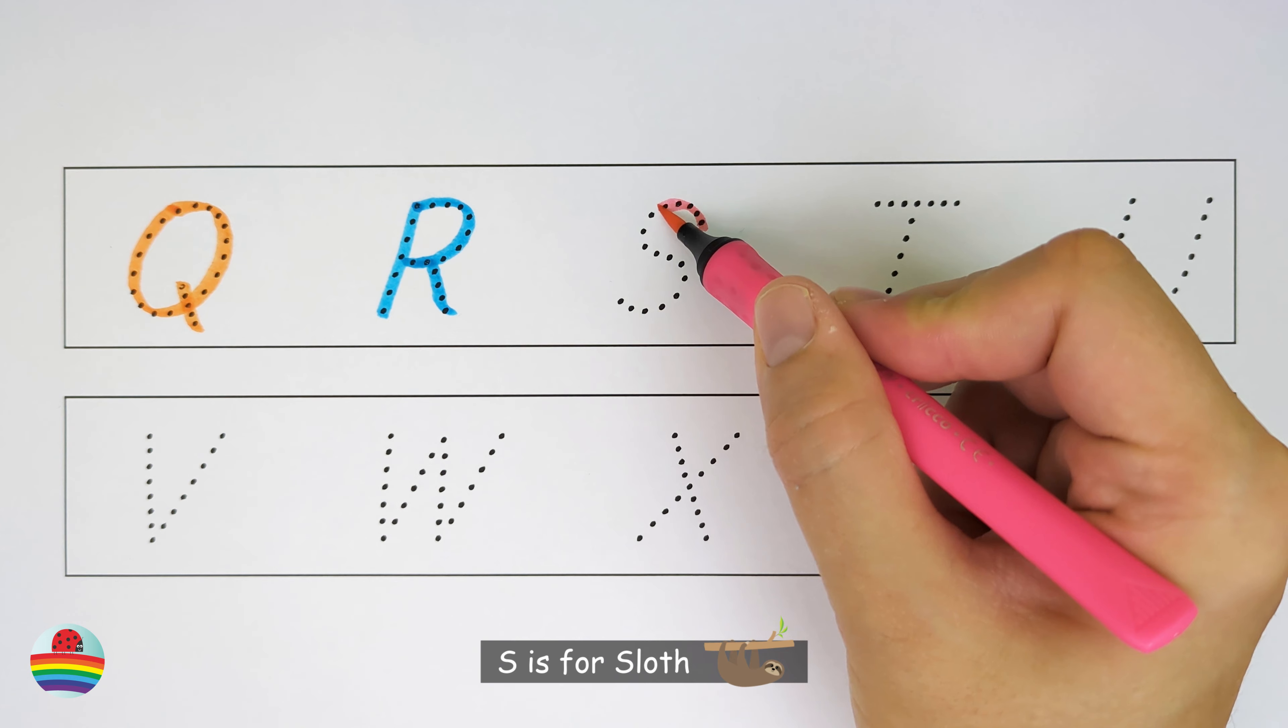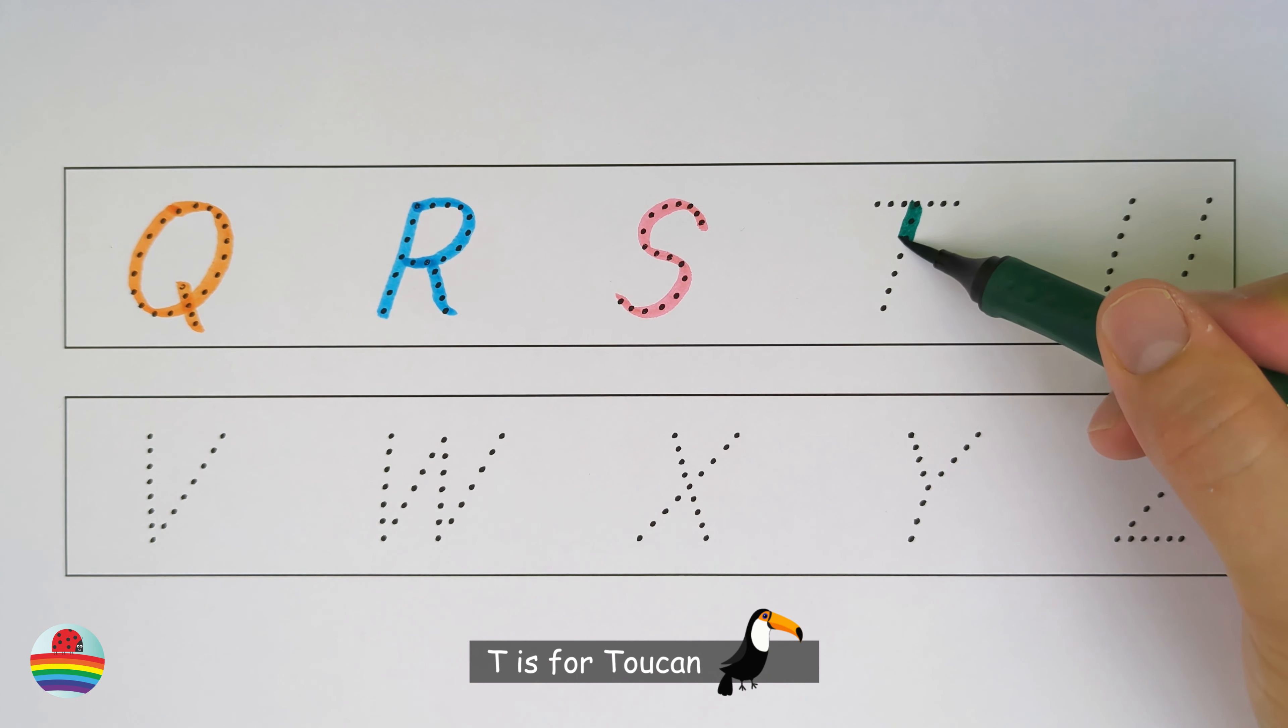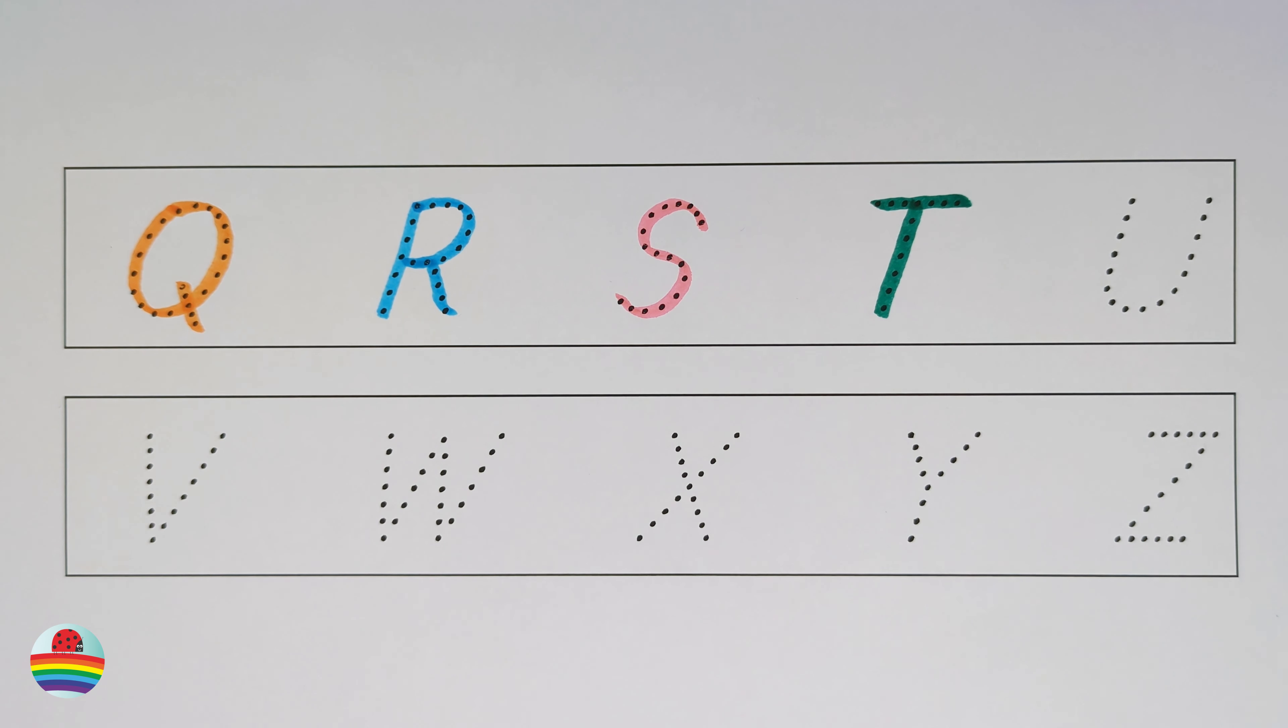S. S is for Sloth. S. T. T is for Toucan. T. U. U is for Unicorn. U.